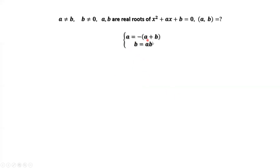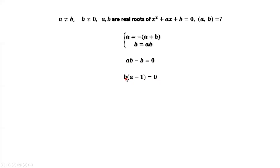From the second equation, we have ab minus b equals zero. Factoring b out from the left-hand side gives b times (a minus one) equals zero. Since b is not zero, then we have a equals one.